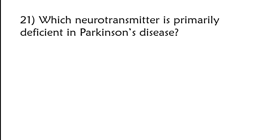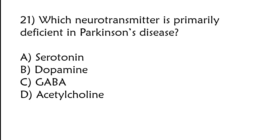Which neurotransmitter is primarily deficient in Parkinson's disease? Serotonin, dopamine, GABA, acetylcholine. The correct answer is option B, dopamine.